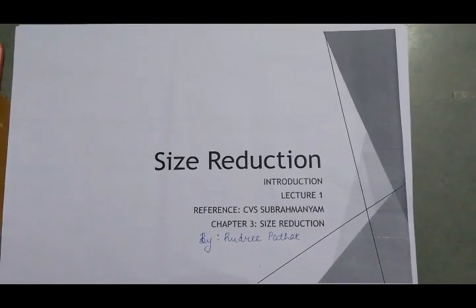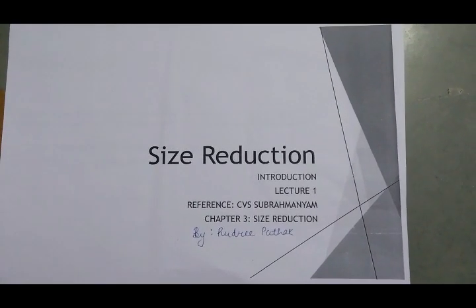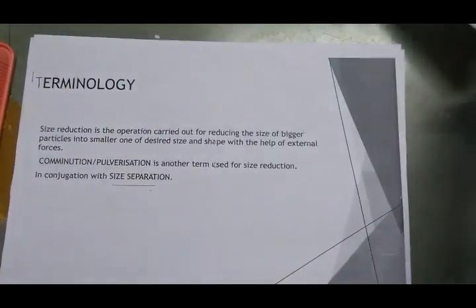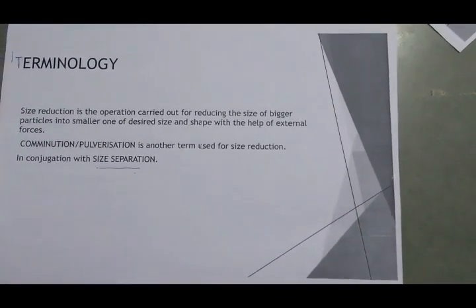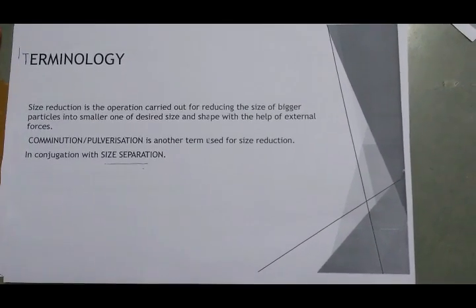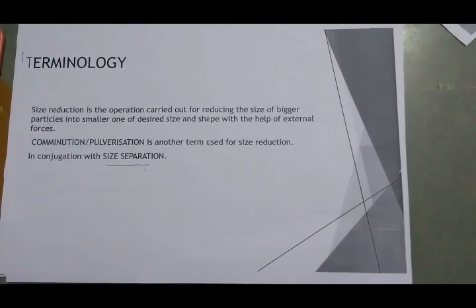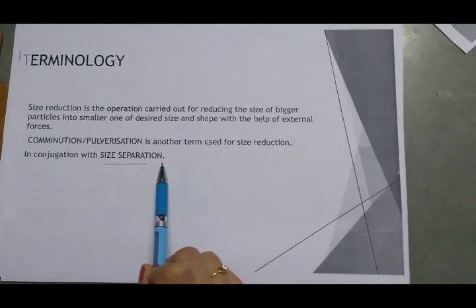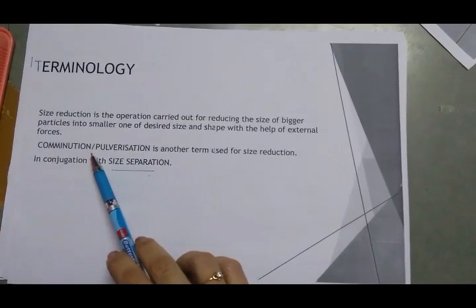We will also cover what instruments are used for size reduction or preparation of monodispersed systems, and what are the current trends in pharmaceutical industries for preparation of such monodispersed systems. Now, let's talk about the terminology and definition of size reduction. It is a simple unit operation carried out for the purpose of reducing the size of larger or bigger particles into smaller particles of desired characteristics with the help of any external force. Size reduction is usually carried out in conjunction with size separation, and can also be termed as comminution or pulverization.